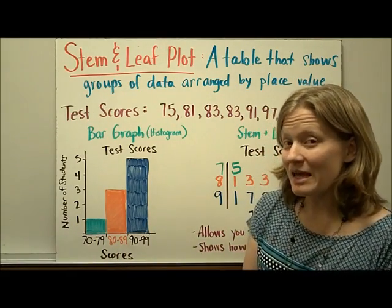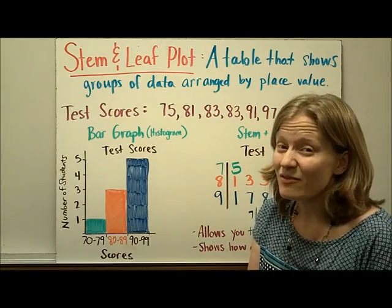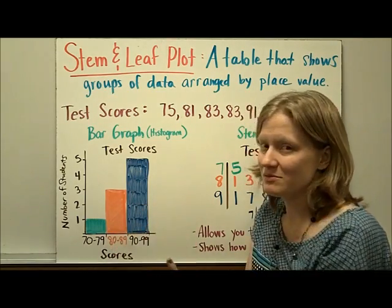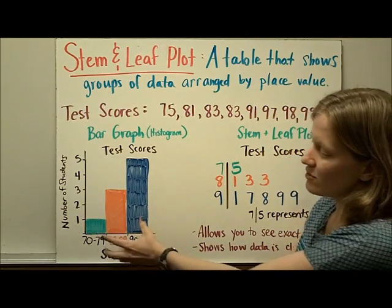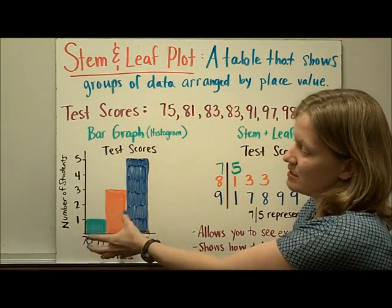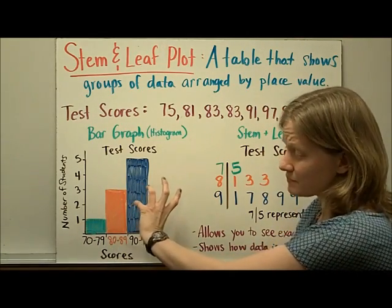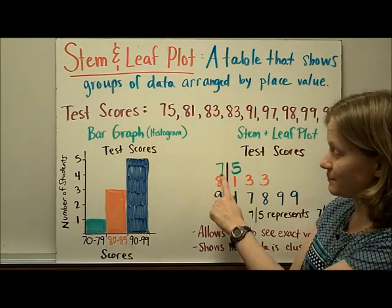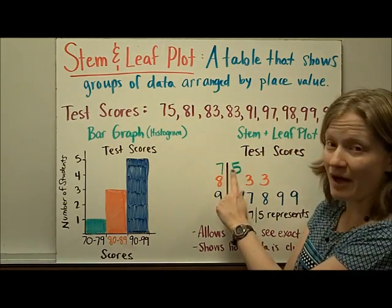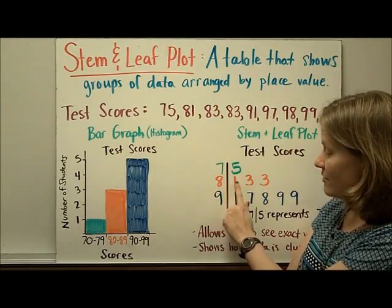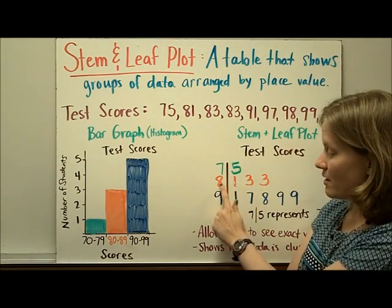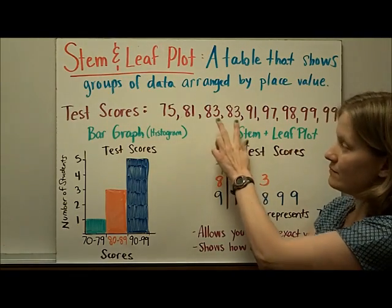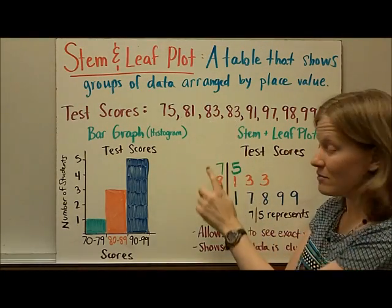But if we take that data and turn it into a stem and leaf plot, we can actually see that same information plus more. It's sort of like picturing that you take this and rotate it onto its side. You can see here that I've shown 75, all the values of 80 — this is 81, 83, and 83. We had two tests that were 83s.